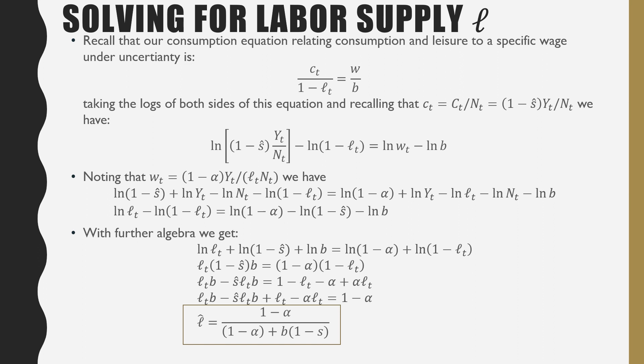So now let's solve for labor supply per household unit. Recall that our consumption equation relating consumption and leisure to a specific wage under uncertainty is defined as the following. We see that there's no sort of uncertainty, meaning that there's no expectation or future variables as their consumption patterns today are not determined by the future. And so too, their work patterns today are not determined by the future. If we were to take the logs of both sides and recalling the fact that our consumption per household could be rewritten as (1 minus S hat), because we already noted that our savings rate is constant, times Y_T all over population N, this over here is just another way of writing consumption C. We have the following.